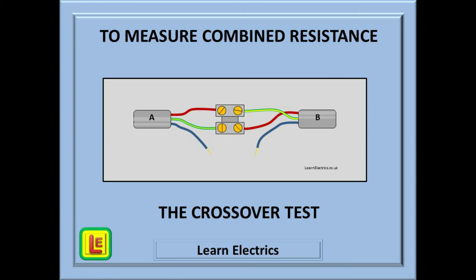Now to measure the combined resistance. If you are going to get confused, this is the time, but stick with it. Understand this and you will be over the hurdle. If you can do this, you will be able to tackle any testing in the future. Using a terminal strip, link the brown of cable A to the earth of cable B. Using the next block of the terminal strip, link the brown of cable B to the earth of cable A. This is known as the crossover test.